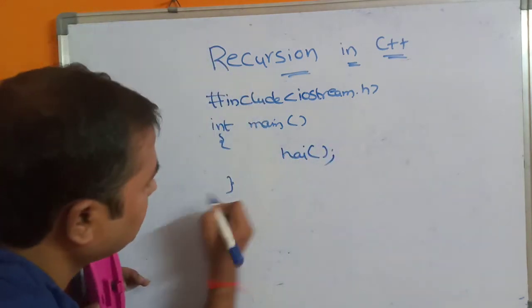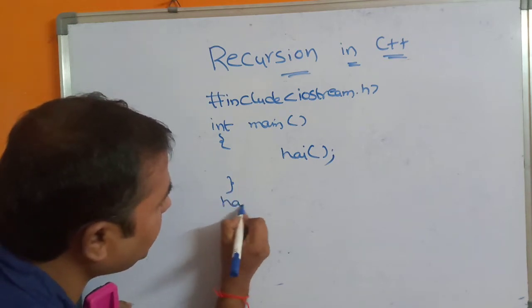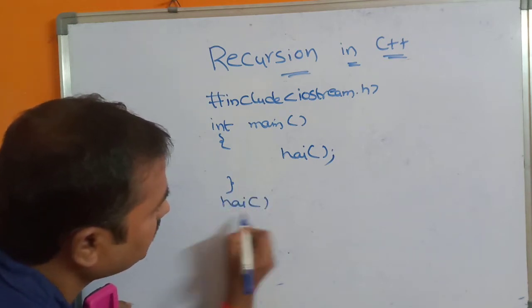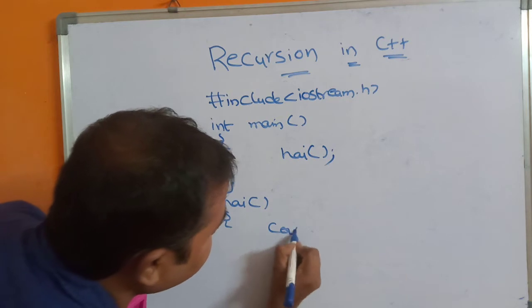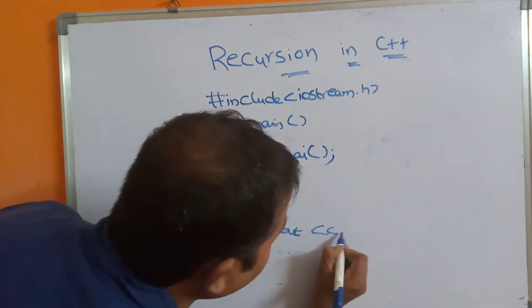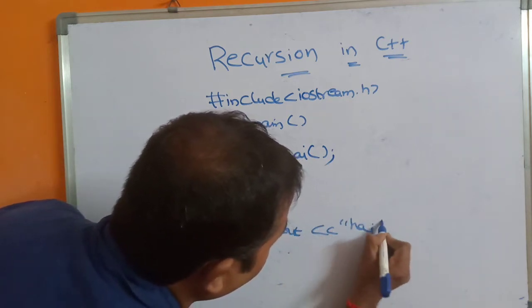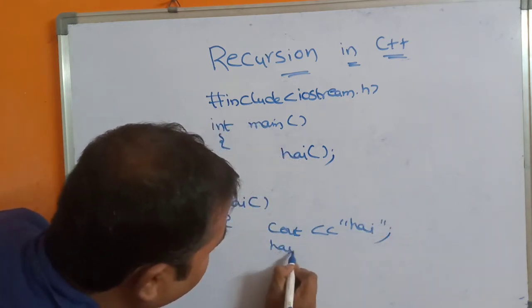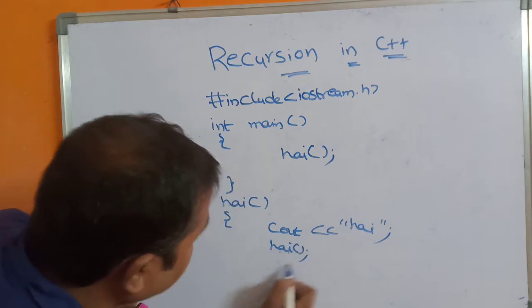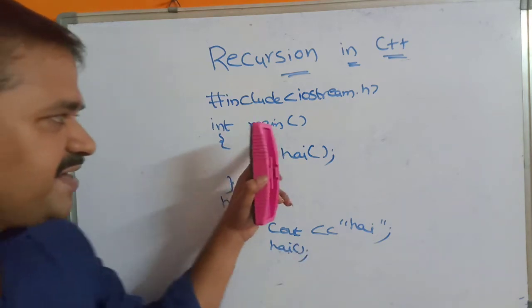Next, define the 'high' function. Display some message: cout << "high". Now let us call the high function again. So now what will happen?